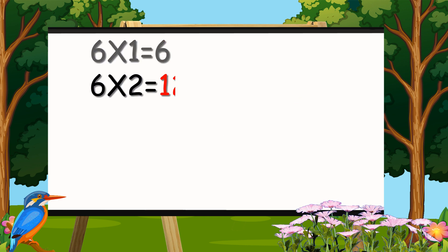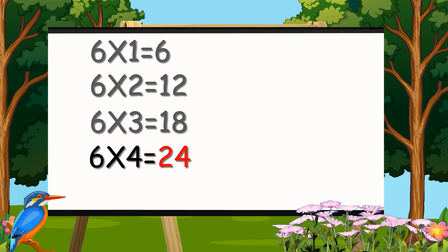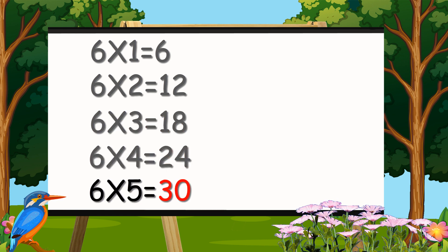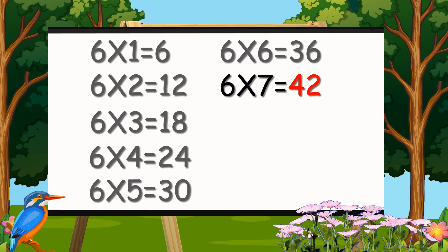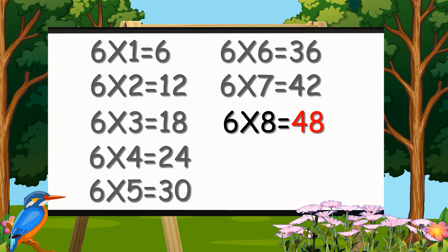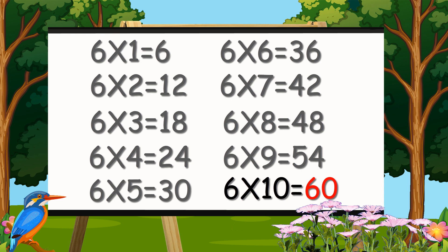6×1=6, 6×2=12, 6×3=18, 6×4=24, 6×5=30. 6×7=42, 6×8=48, 6×9=54, 6×10=60.